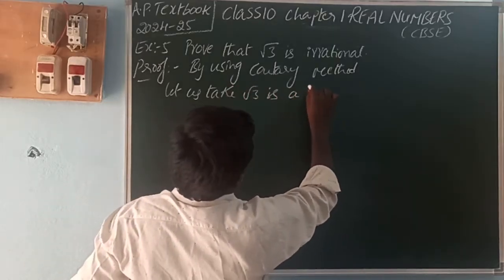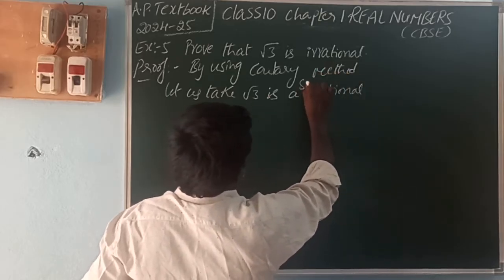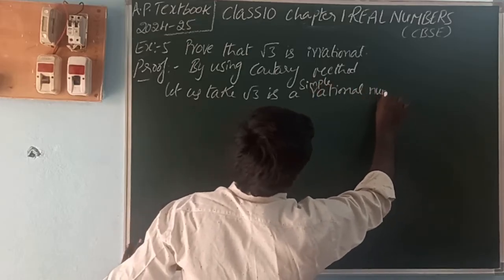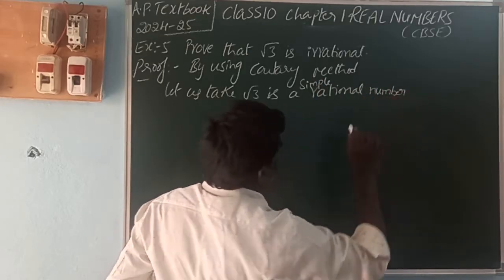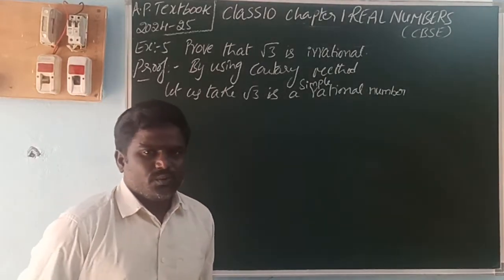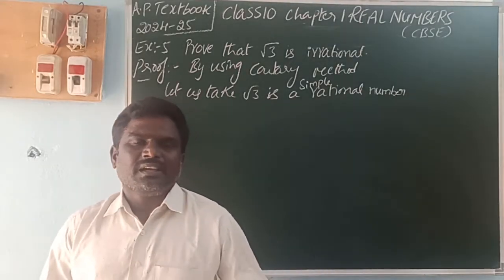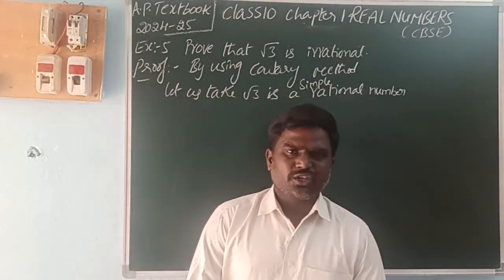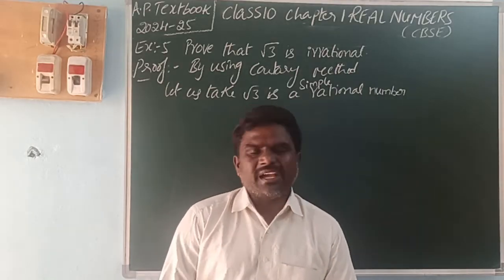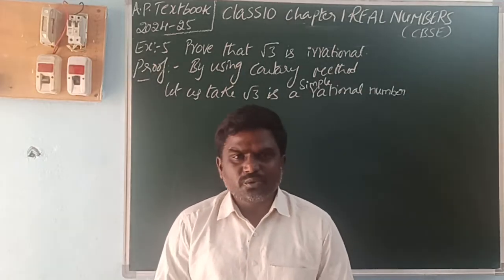What is a rational number? A number which is in the form p by q, where q is not equal to zero and p and q are integers. What is a simple rational number? A number in the form p by q where q is not equal to zero and p and q are co-primes. Co-primes means there is no common factor between the two numbers.